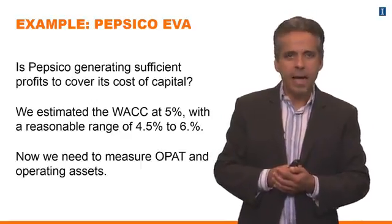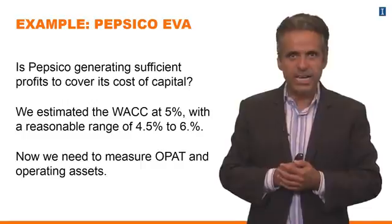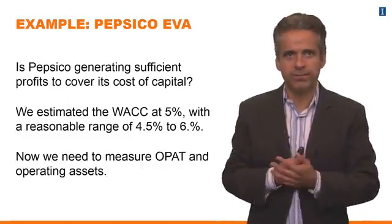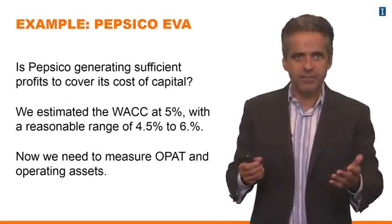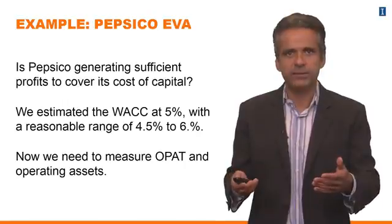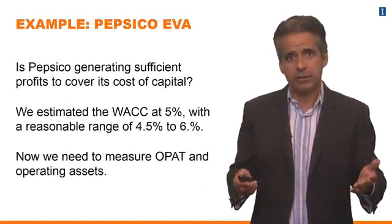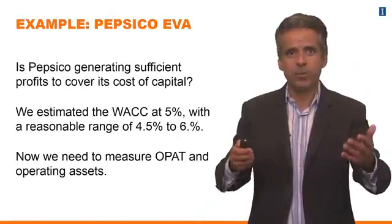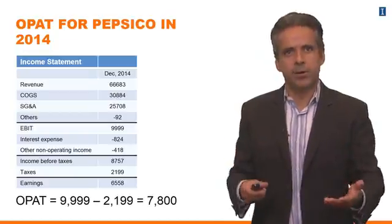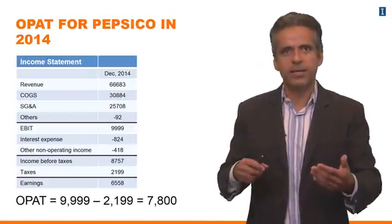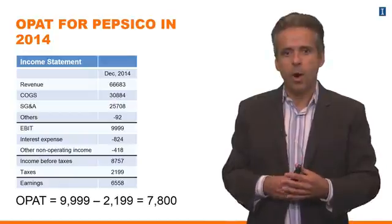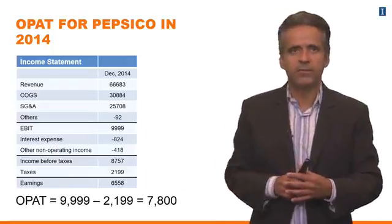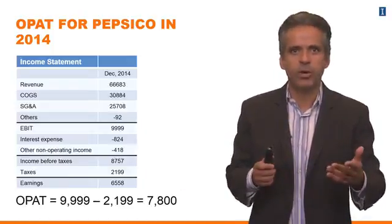Let's go back to PepsiCo and figure out whether PepsiCo is generating sufficient profits to cover its cost of capital — that's the notion of EVA. We estimated the WACC at 5% with a reasonable range of 4.5% to 6%, so we can use this percentage required return to measure EVA. All we need to do is measure OPAT and operating assets. OPAT is the difference between operating income (EBIT) minus taxes, so OPAT for PepsiCo in 2014 was $7.8 billion.